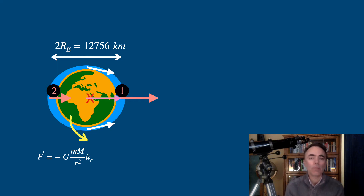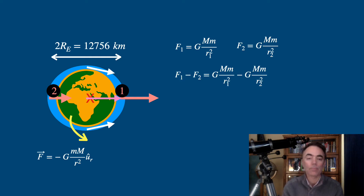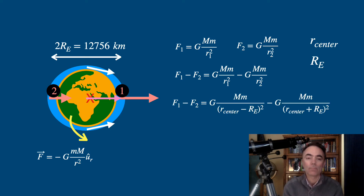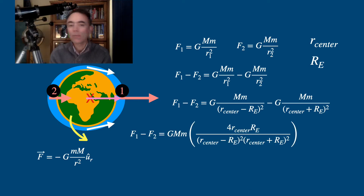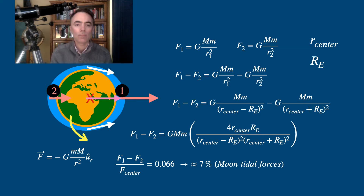We can calculate the gravitational force on the part of the oceans closest to the Moon and on the part of the oceans farthest from the Moon. We can use Newton's equation for this, where r1 is the short distance and r2 is the long distance. This can be written in terms of the distance to the center of the Earth and the radius of the Earth. We find that the tidal force of the Moon on the oceans is about 7% larger on one side than on the other side.